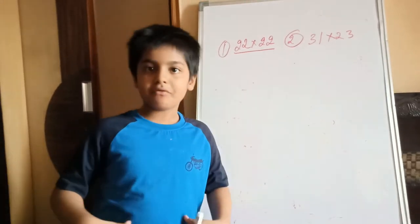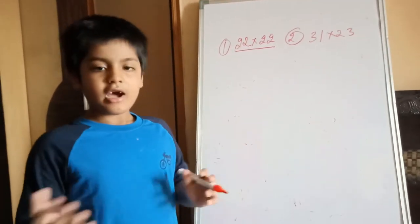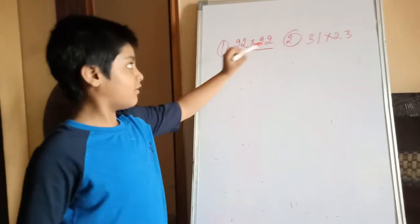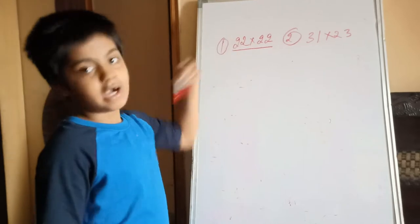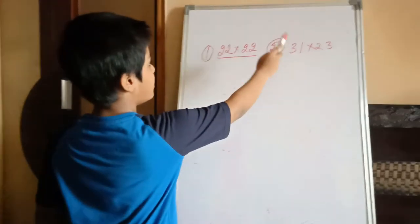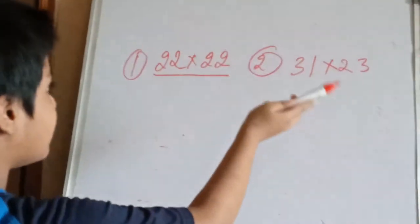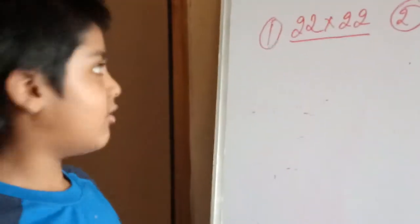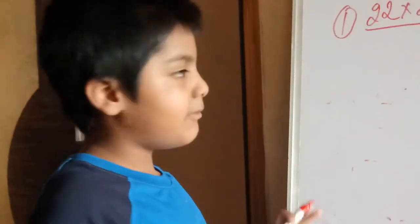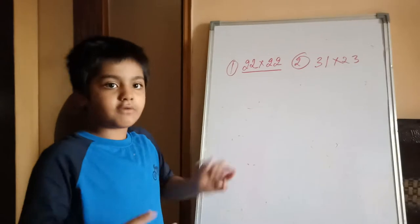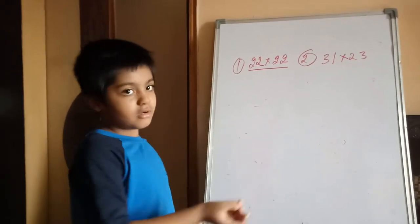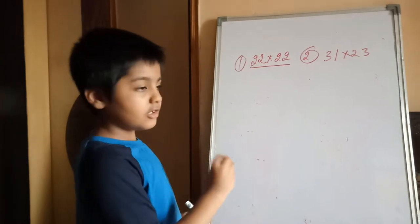Hello guys, welcome back to my video. Today we're going to learn how we can multiply big numbers. So you see, this is a big number: 22 multiplied by 22, and this is a more bigger number: 31 multiplied by 23. So we will learn how to solve these questions. I'm going to show you how much faster I can solve, like in more than 5 seconds.